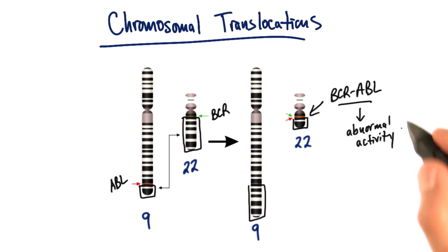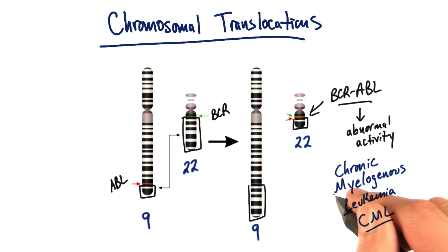And as you can imagine, this fusion protein has abnormal activity. And the result is a form of blood cancer called chronic myelogenous leukemia, or CML.